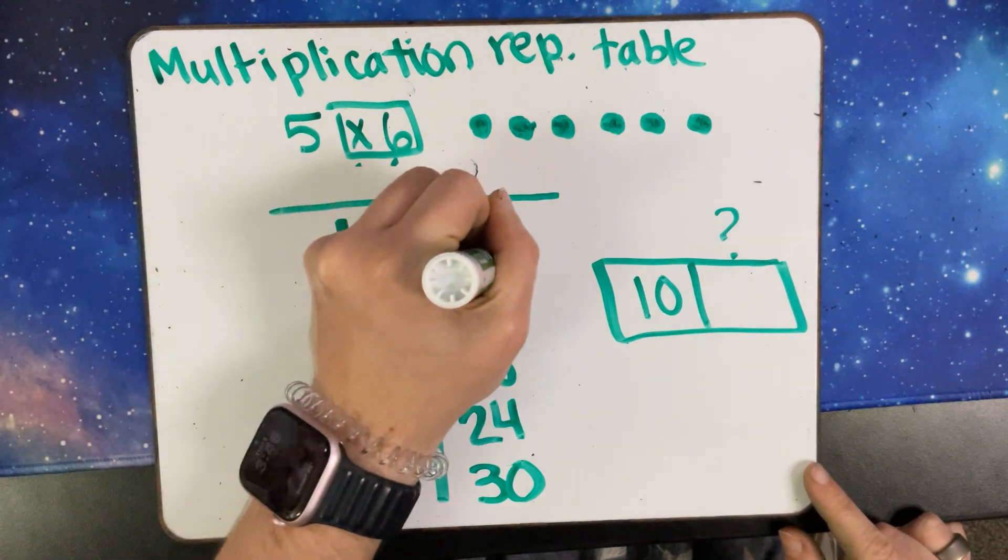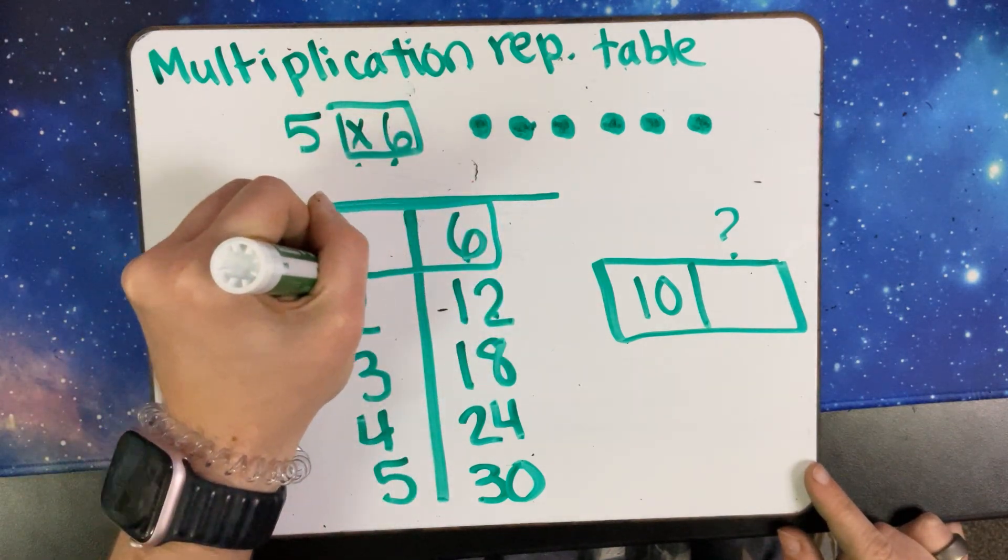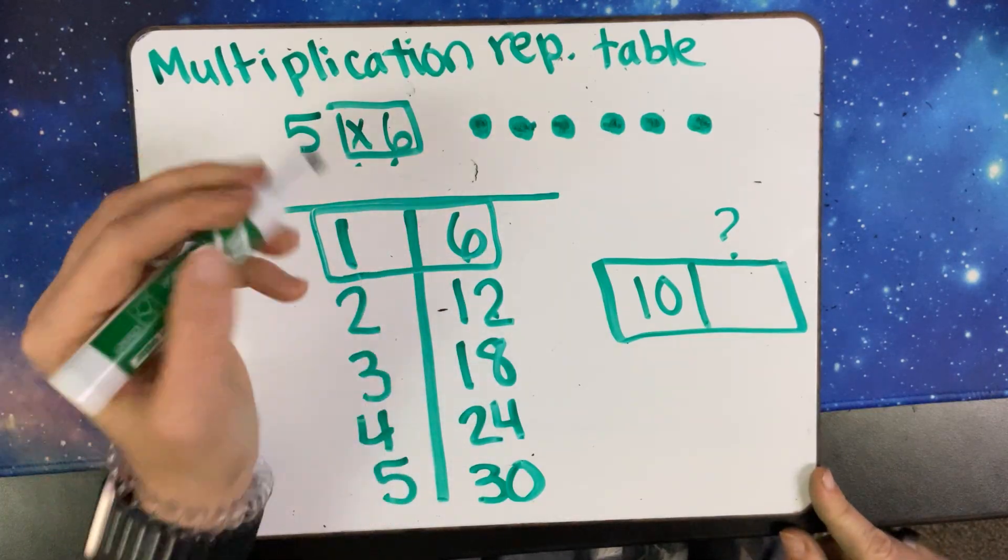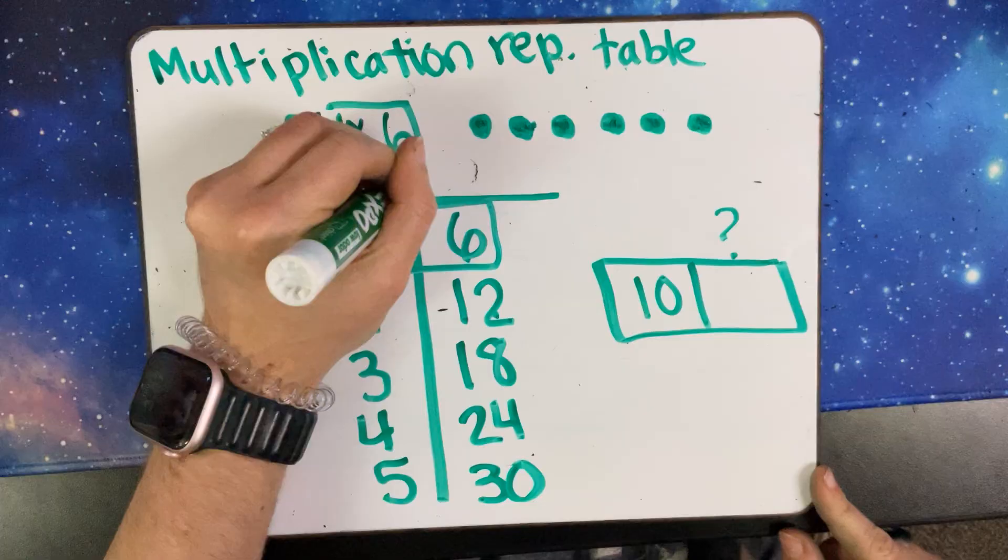So one thing we do ask them to look at is the first input, because that's going to be your number times one. Any number times one is going to be itself, so this tells me the rule is multiplied by six.